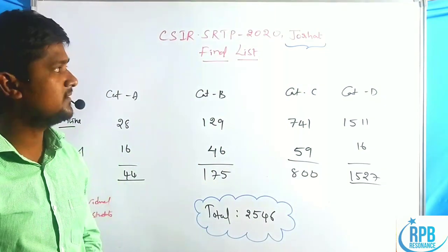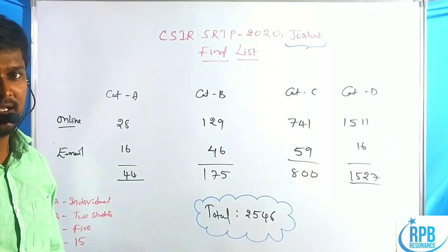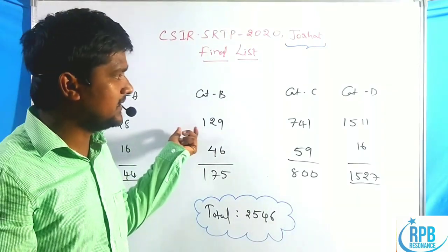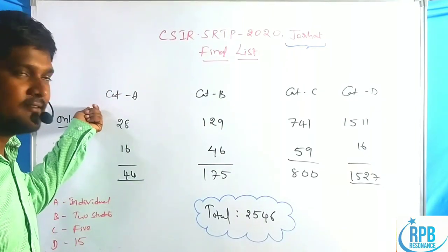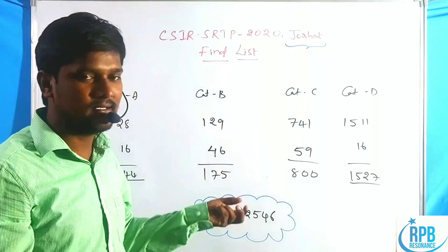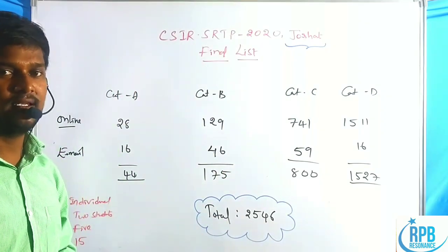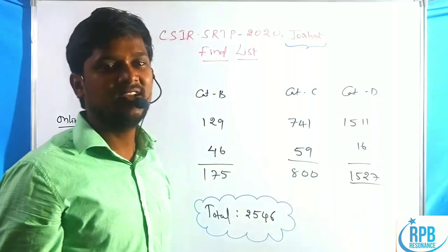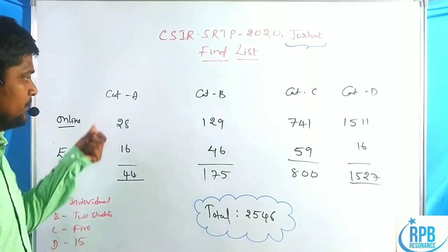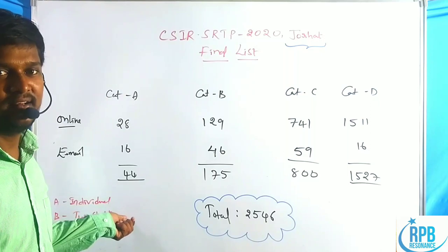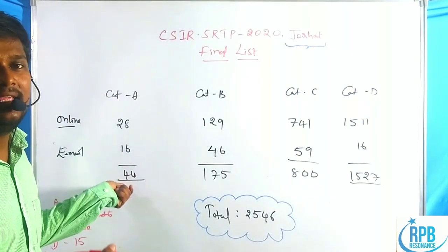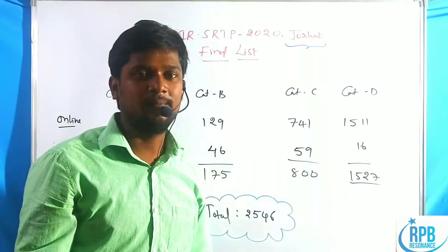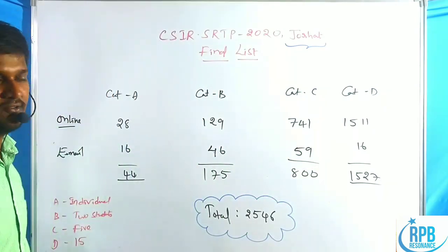In a previous video I covered the curriculum of CSIR SRTP 2020 Jorhat. Students are classified into four categories: the first category is an individual project, the second combines two students in a single project, the third is a five-member group, and the fourth is a large 15-member community group. International rewarding awards are given, with twice-weekly interactions with mentors for certain categories.